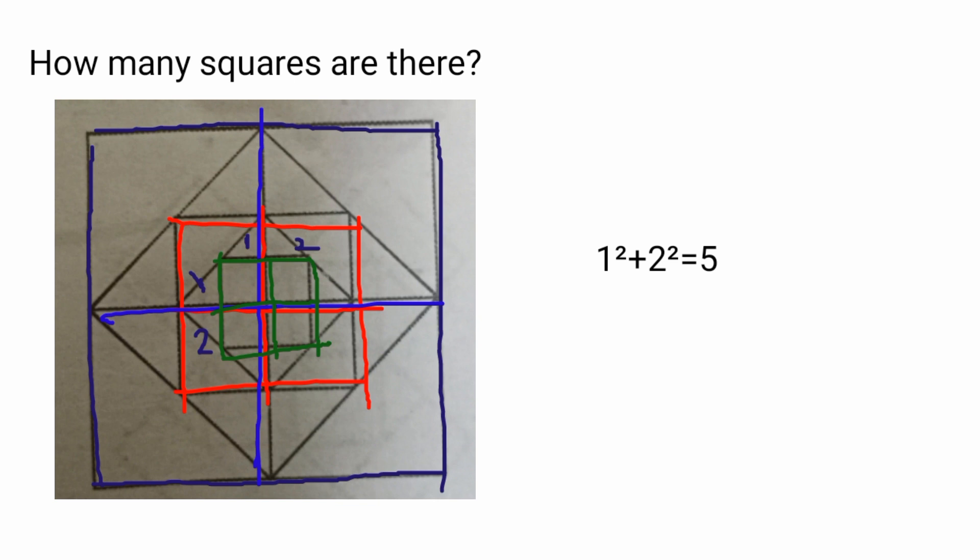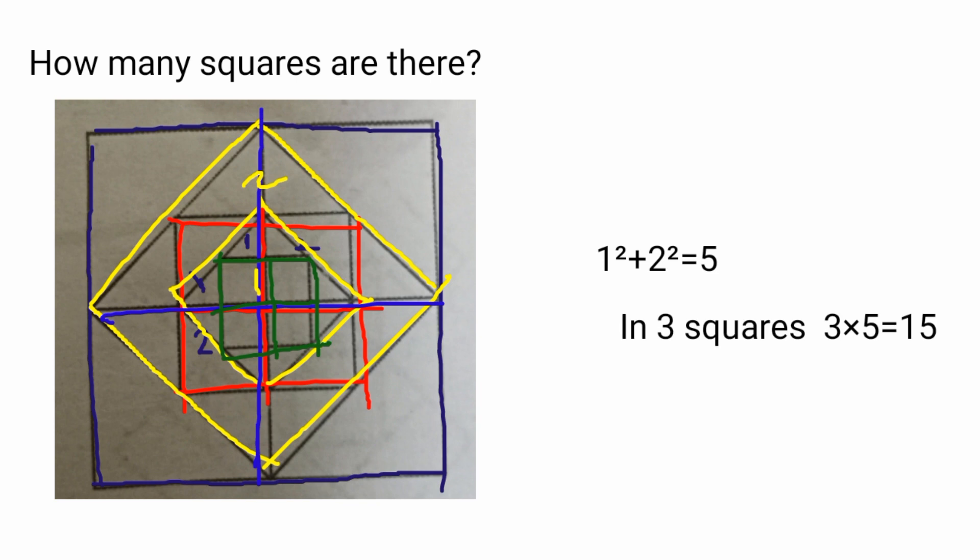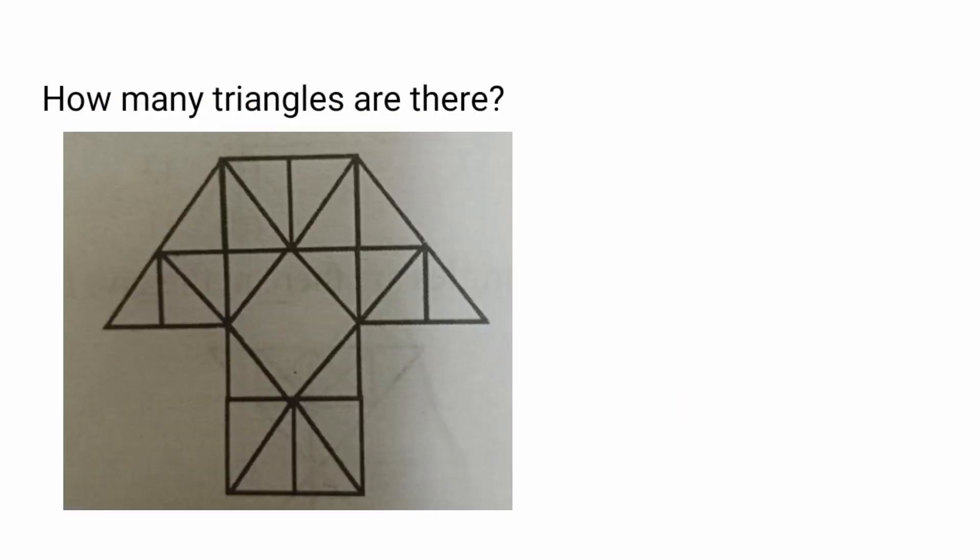And other than this, two more squares are there. That is being shown here. One is this and the other one is this. So in total, how many squares will be the 15 plus 2? 17. Next question.